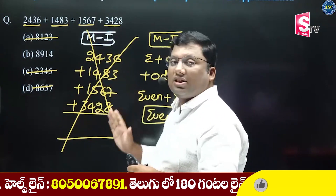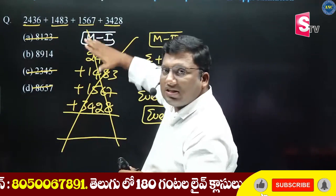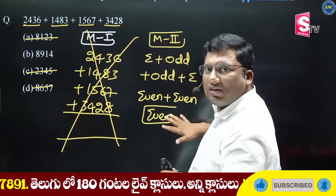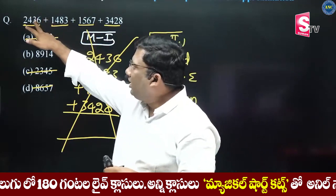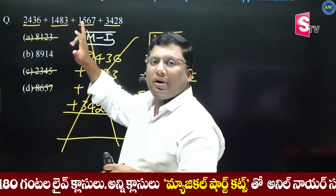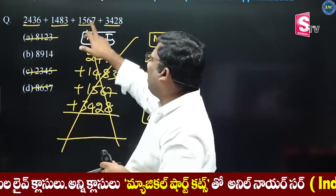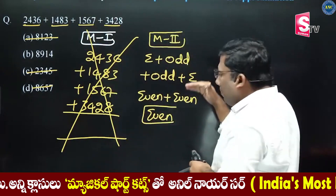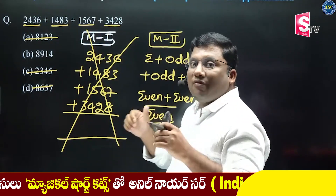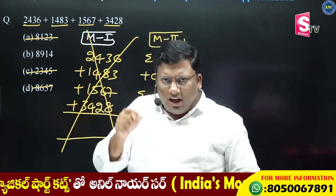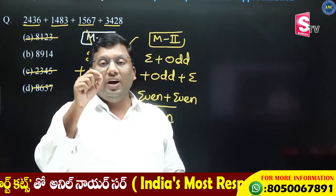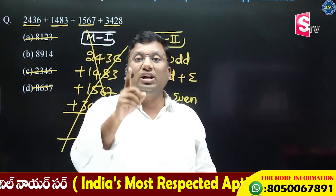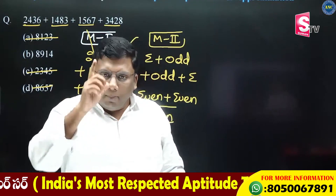If you look at the answer, you know this calculation. The answer is 10. Even plus odd is odd. Odd plus odd is even. The answer is 10. These things are difficult.